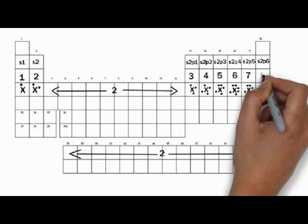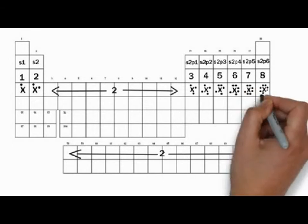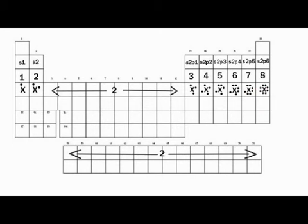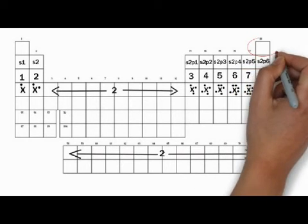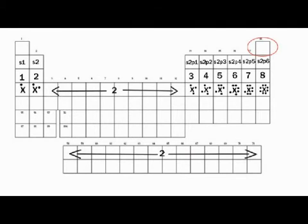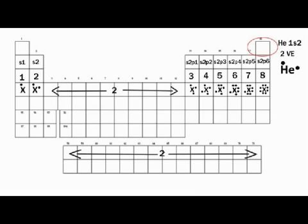Finally, S2P6 will have eight valence electrons and eight dots around the symbol. That's the maximum number of valence electrons an atom can ever have — that's the noble gas column. This pattern holds true for the entire periodic table except for one element, helium, which only has two electrons in a 1s2 configuration. Therefore, it has two valence electrons and a Lewis symbol with only two dots. This covers valence electrons and Lewis dots.